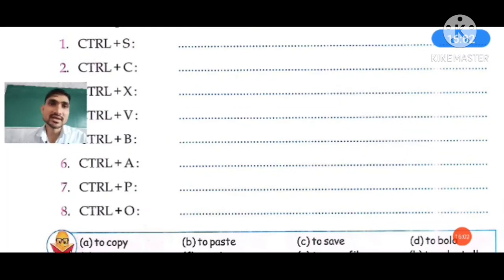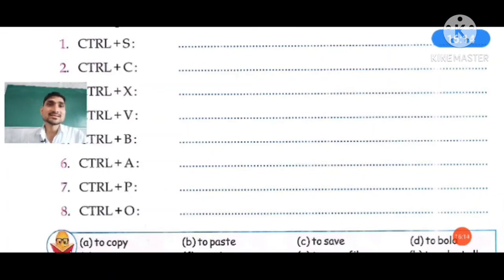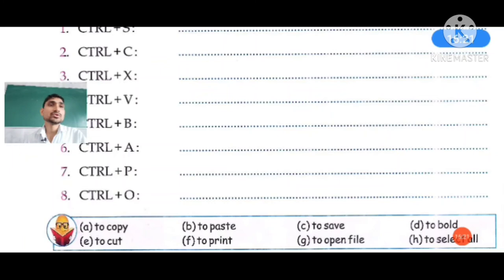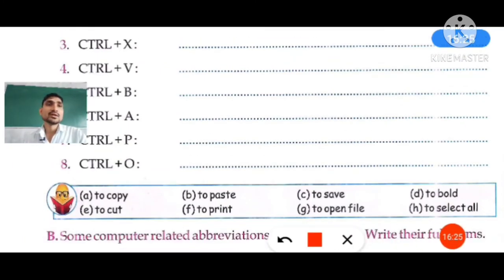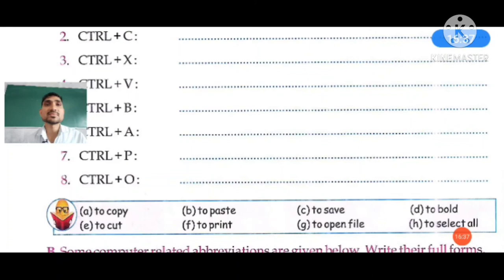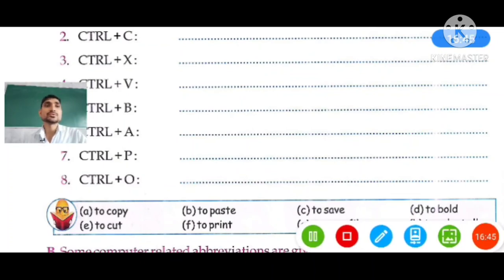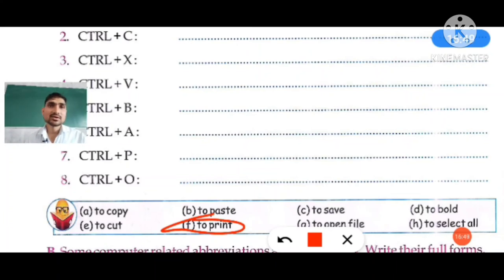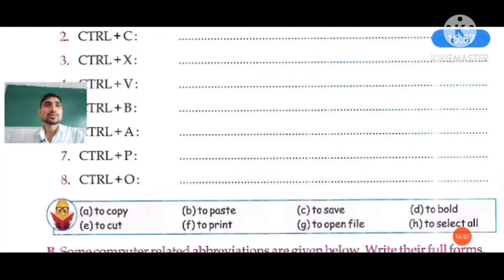Question six: Ctrl+A. When you press Control and A, all the sentences on your computer screen will be selected. It is used to select all. Question seven: Ctrl+P — P suggests print, so choose option F to print. Question eight: Ctrl+O — O suggests open, so the right answer is to open a file.